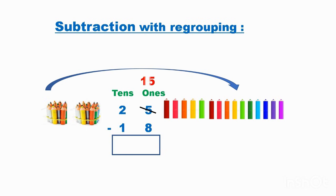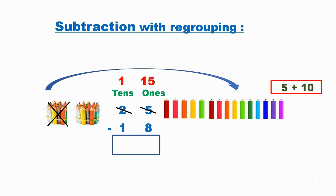So one ten is given already. Five plus ten is equal to fifteen. So now I have fifteen. How many tens are remaining? One ten is remaining. Now from fifteen I can take out eight.